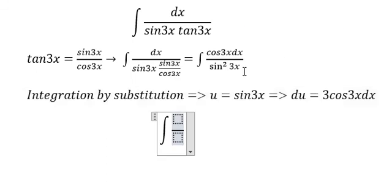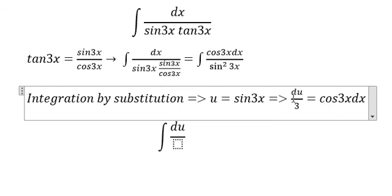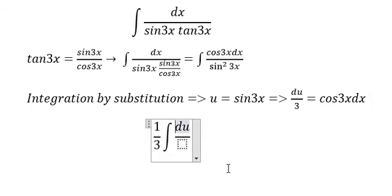cos 3x dx becomes du with the factor of 3. So we have du and the number 3. We take 1 over 3 and put it outside.